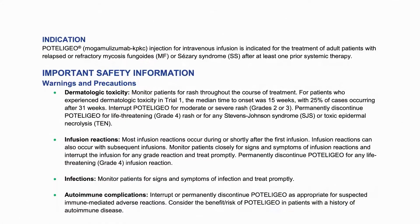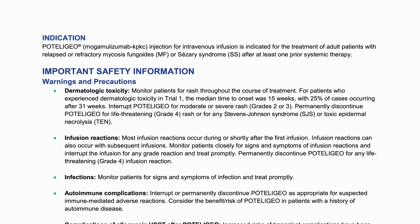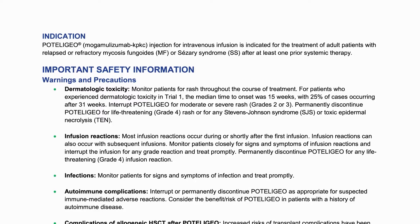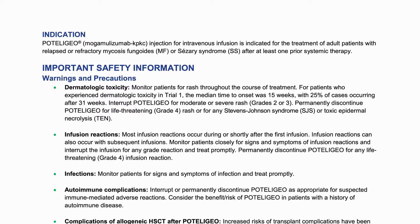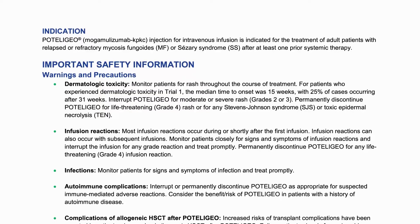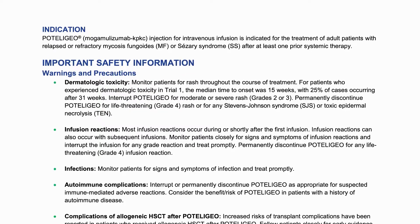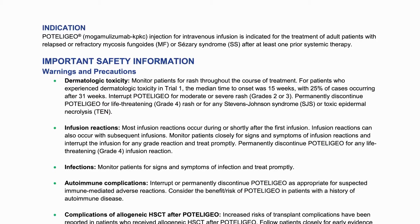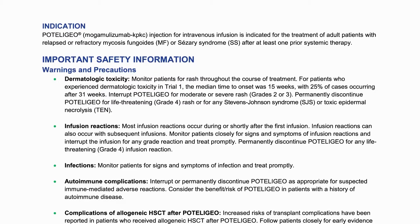In summary, CCR4 plays a role in MF and SS. Mogamolizumab is a first-in-class monoclonal antibody that selectively targets CCR4-positive T-cells. Mogamolizumab-KPKC injection for intravenous infusion is indicated for the treatment of adult patients with relapsed or refractory mycosis fungoides, MF, or Sézary syndrome, SS, after at least one prior systemic therapy.